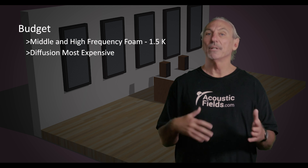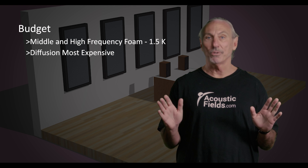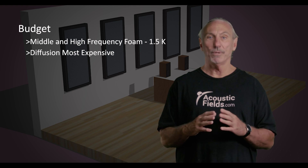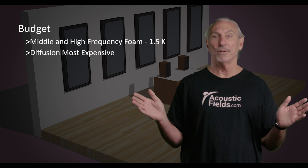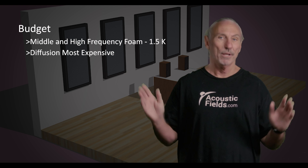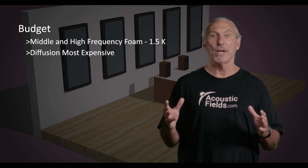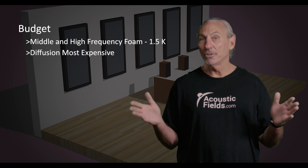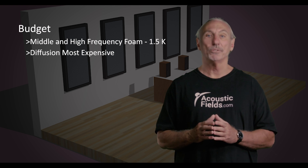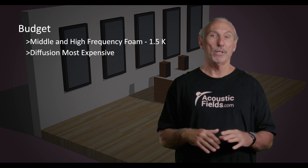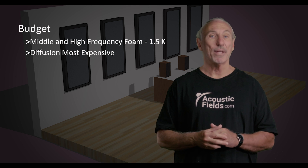Diffusion can get to be quite expensive. Our diffusers are all furniture-grade quality — real wood materials, finished with five coats of sealer and wet sanding. They probably look better than most of the furniture in your house. To do diffusion on a wall, you're talking $10,000 to $15,000 for one surface. The ceiling is a whole other issue — I've seen ceiling diffusion costs go $30,000, $40,000, even $50,000.